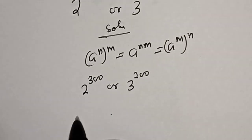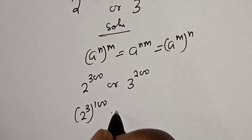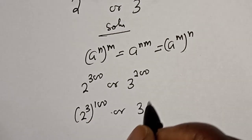Then this can be written as 2 raised to power 3 to the power of 100, or 3 raised to power 2 to the power of 100.